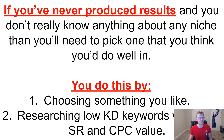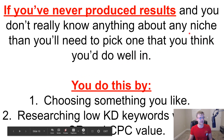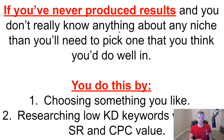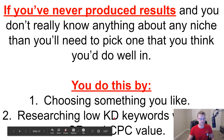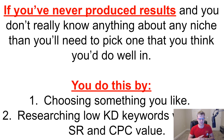If you've never produced results and you don't really know anything about any niche, then you'll need to pick one that you think you'll do well in. Let's say you don't know anything about any niche — you just kind of learned about this SEO thing and don't really know about anything except maybe memes. The way you do that is two things: step one, you choose something you think you'd like. And step two, you start researching low keyword difficulty keywords with high search rates and high CPC values.